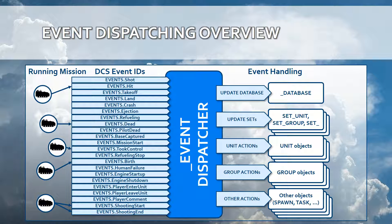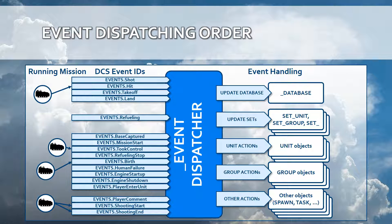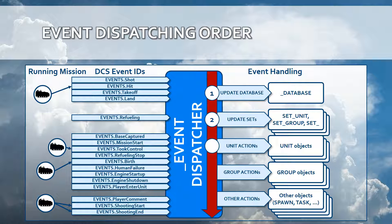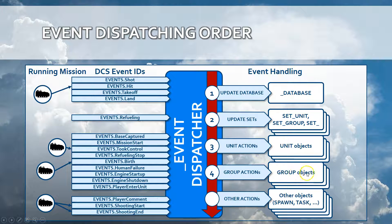The same applies for group. There are also other objects not related to groups, units, SetUnit, or database that can also receive different events occurring within your mission. There is an order of things: when certain events are occurring, they start by updating the database first, then the sets are updated, then the unit objects are handled, then the group objects are handled, and then the other objects are handled. This layering is automatically done by the Event Dispatcher.